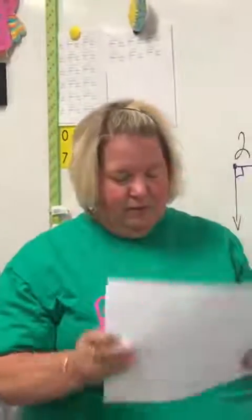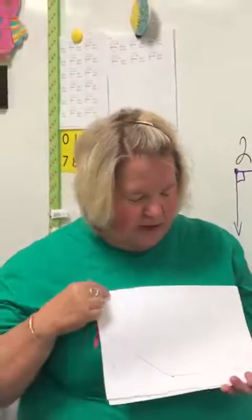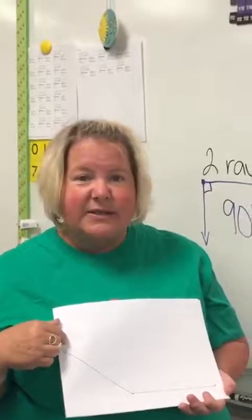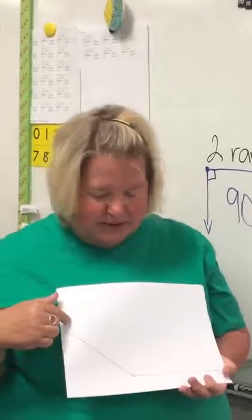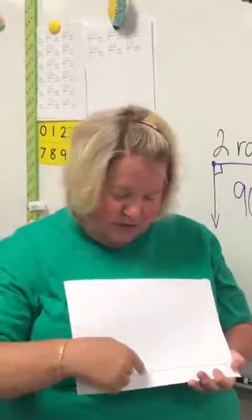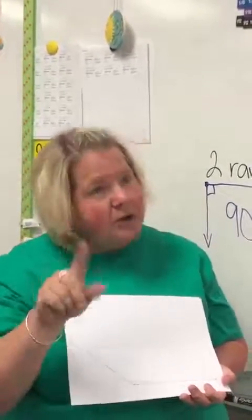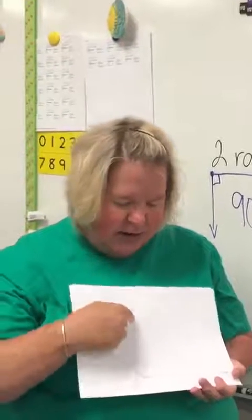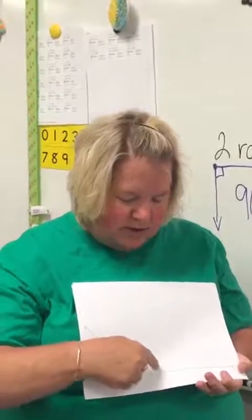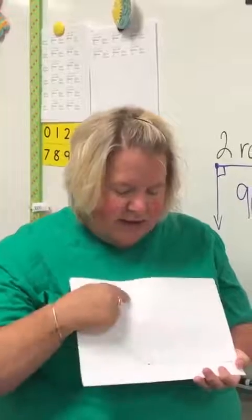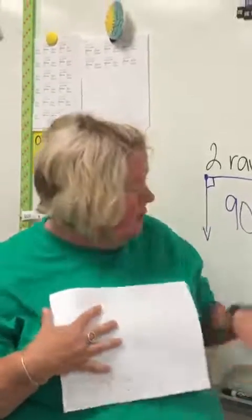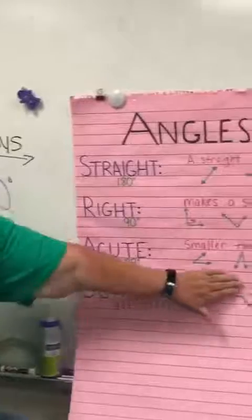Now here is our second one. What kind of angle do you think this is? It's an obtuse angle, and remember if it were to come straight up here, a lot of times not always but a lot of times a right angle will have a little square in the corner. So this is bigger than a right angle, and if it's bigger than a right angle, larger than 90 degrees, it is an obtuse angle.